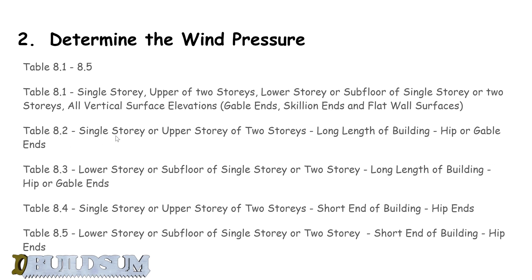Table 8.2 is for a single storey or upper storey of a two-storey building — the long length of the building with a hip or gable end. This is going to be applicable for us for our long side of the building. Table 8.3 is for the lower storey or subfloor of a single storey or two-storey building — long length of the building — so it's not going to apply to us.